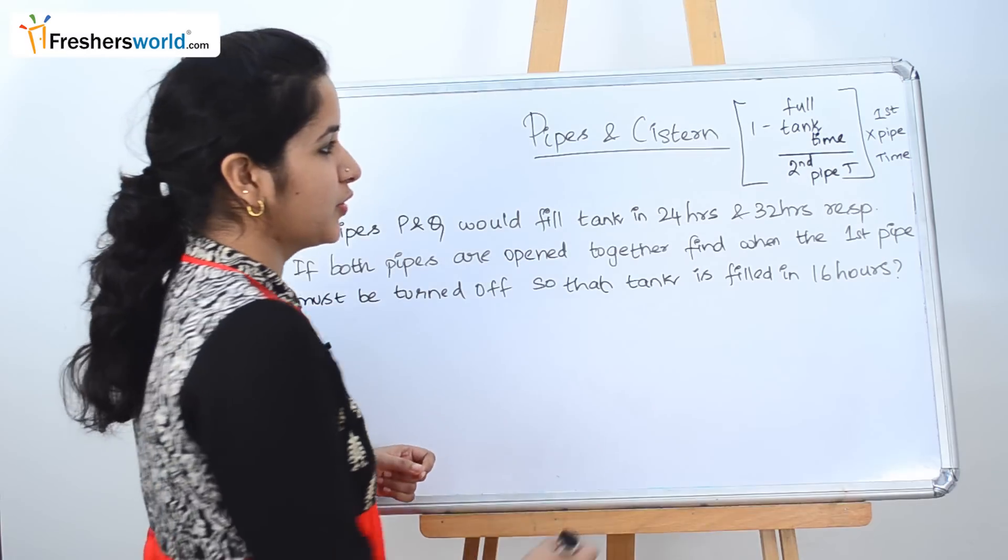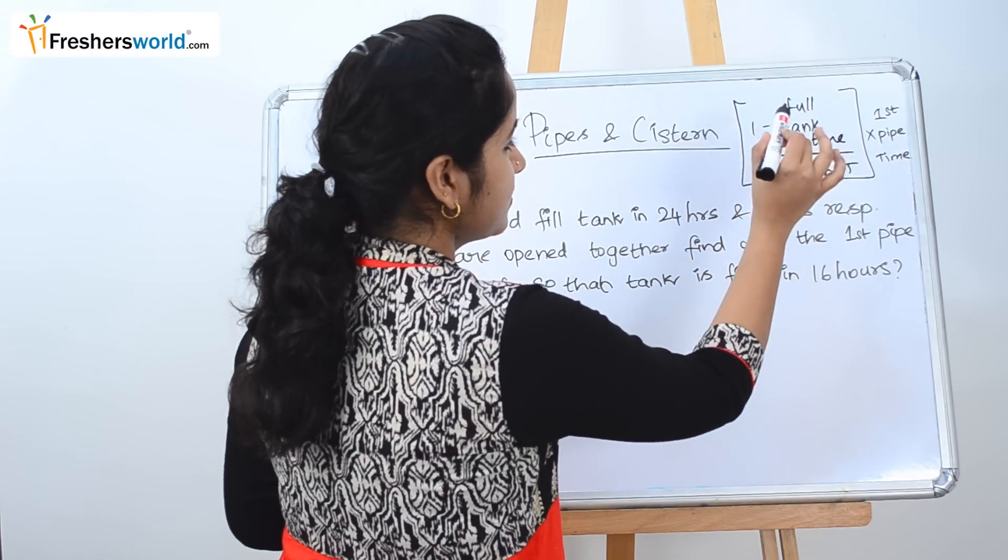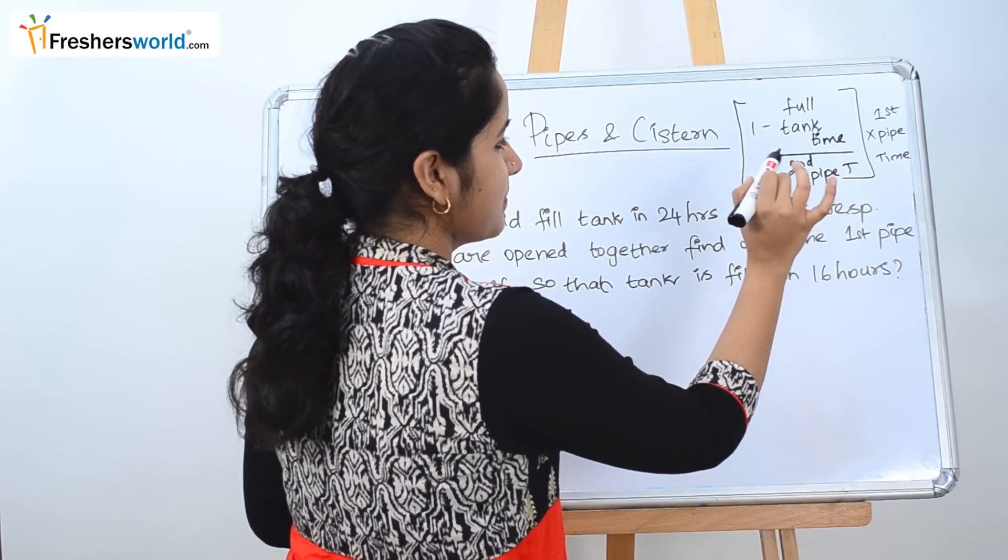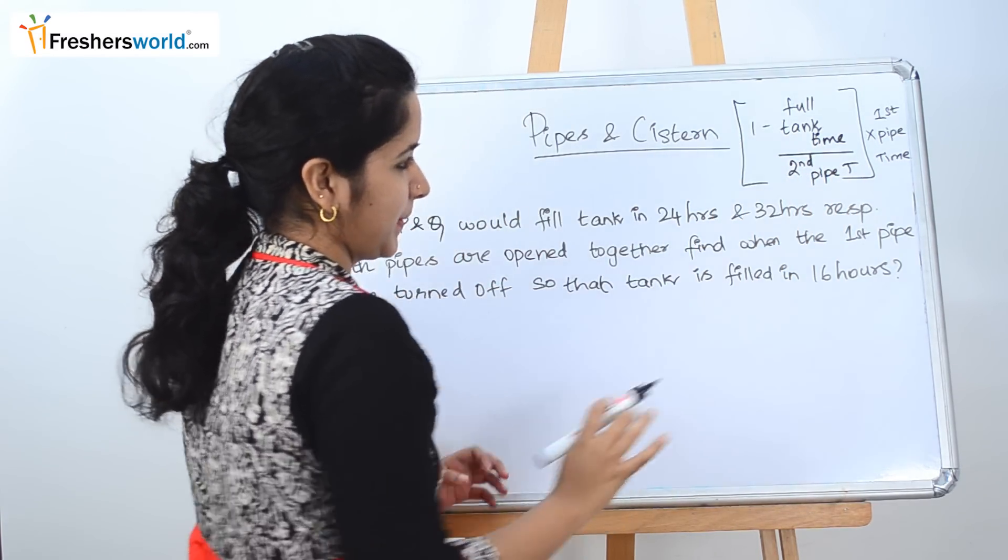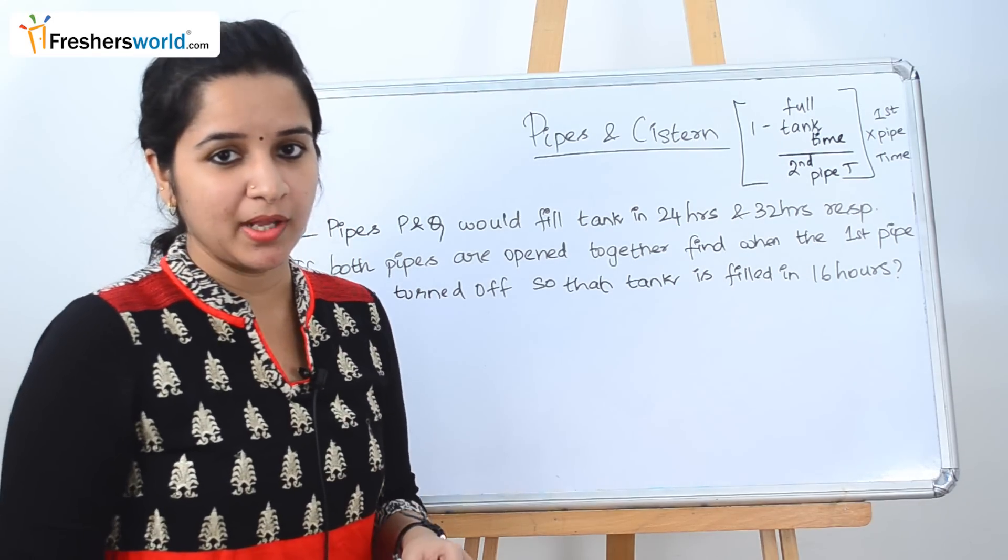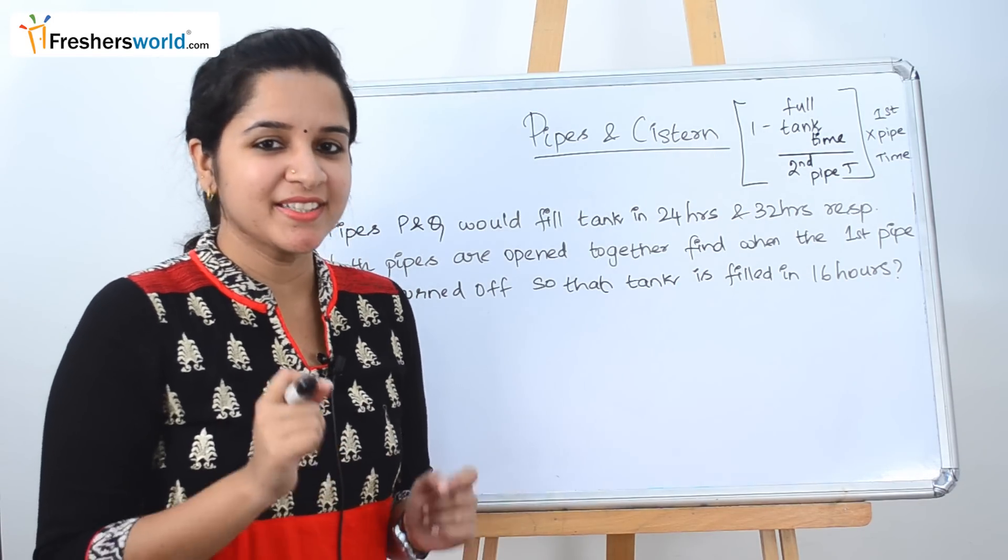The second concept that we are going to look at today is: 1 minus full tank time by second pipe time into first pipe time. So when are we going to use this formula? Let's solve a problem to understand the formula better.